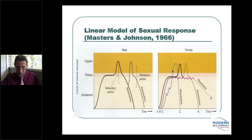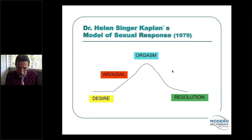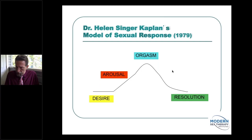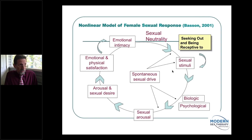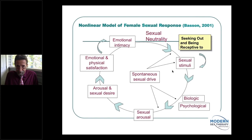Helen Kaplan's contribution shortly after Masters and Johnson simply added the desire component to arousal, orgasm, and resolution. Earlier models pointed to things like muscle tension and increased blood flow. Then in 2001, Rosemary Basson from the University of Toronto presented what she calls a non-linear model of sexual response, showing that many people don't respond in the linear A-to-B-to-C-to-D fashion.